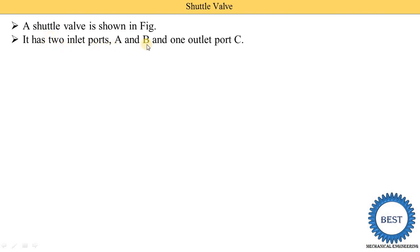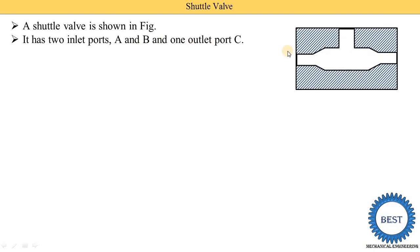The shuttle valve is shown in this figure. It has two inlet ports, A and B, and one outlet port, C. This is a diagram — this section view indicates the body, and inside this body there is a hollow portion. Inlet port A is where the fluid is supplied, and inlet port B is also an inlet port.